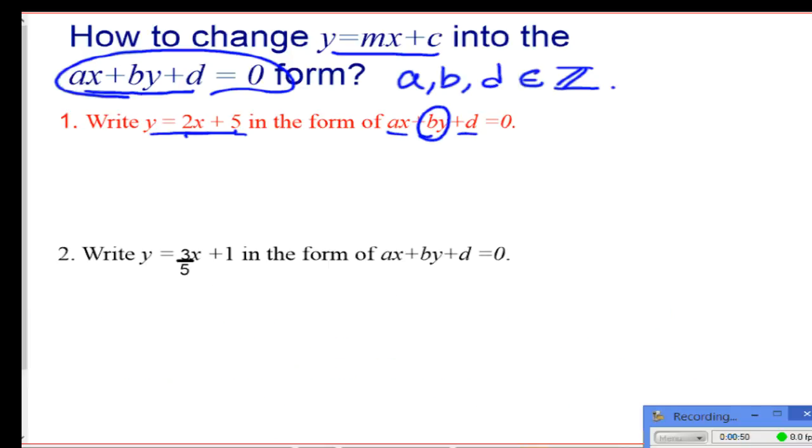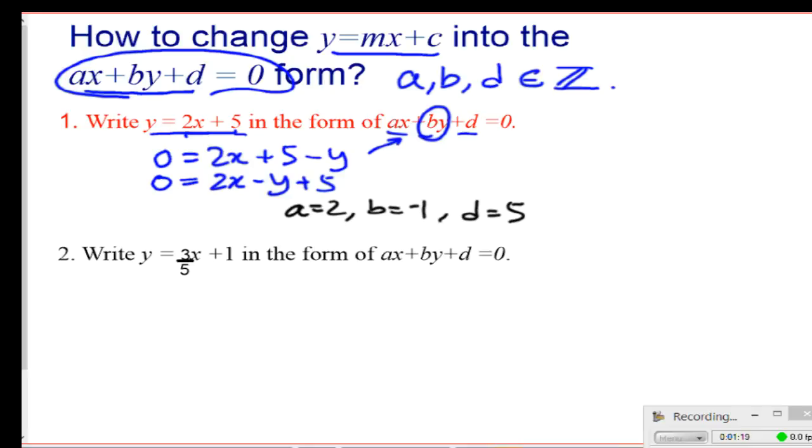To do this, I need to move the y to the other side. So I can write 0 = 2x + 5 - y. I rearrange it to be of this particular form, that is 2x - y + 5. Thus I have it. In this case, a = 2, b = -1, and d = 5.